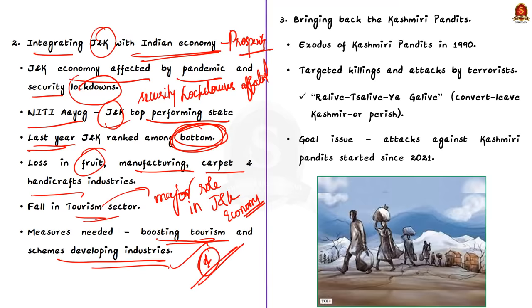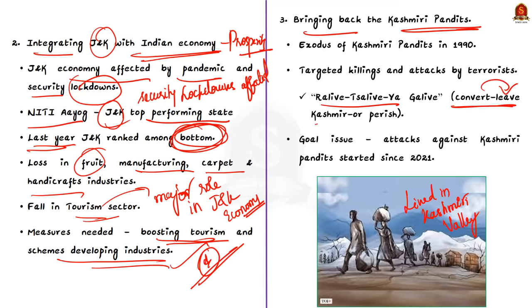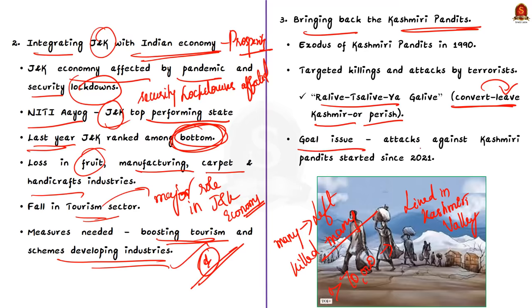The third goal was bringing back the Kashmiri Pandits — the Hindu Kashmiris who lived in the Kashmir Valley. In 1990, they were subjected to target killings and attacks by terrorists, who compelled them to convert with the slogan 'Raliv, Taliv, ya Galiv' meaning convert, leave Kashmir, or perish. Some data suggests 650 Kashmiri Pandits were killed and more than 75,000 fled Kashmir in January 1990, with 70,000 more following till March 1990. Bringing them back was one of the government's goals, but once again attacks against Kashmiri Pandits have started, so this goal is also not fulfilled.